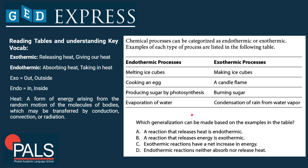Which generalization can be made based on the examples in the table? A: A reaction that releases heat is endothermic. B: A reaction that releases energy is exothermic. C: Exothermic reactions have a net increase in energy. D: Endothermic reactions neither absorb nor release heat.